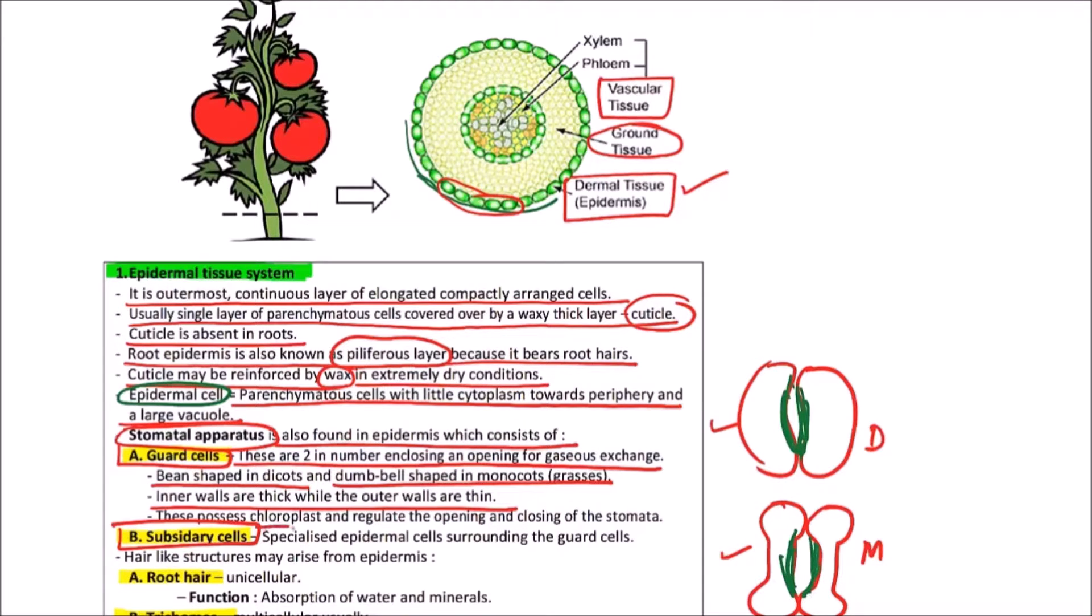These possess chloroplast and regulate the opening and closing of the stomata. The subsidiary cells which are around the guard cells are specialized epidermal cells surrounding the guard cells.